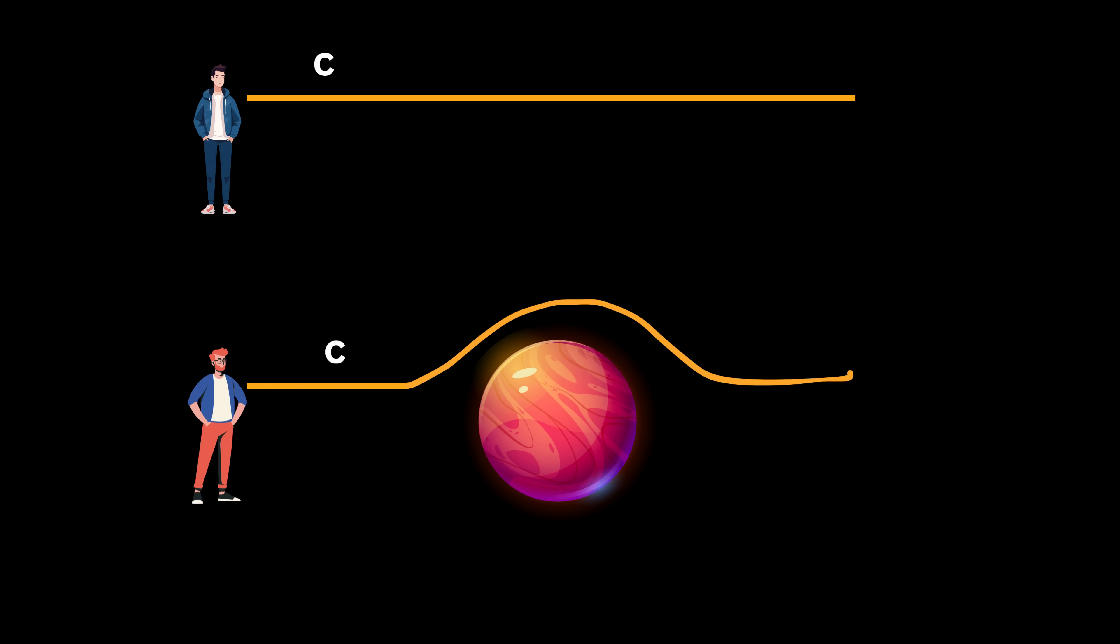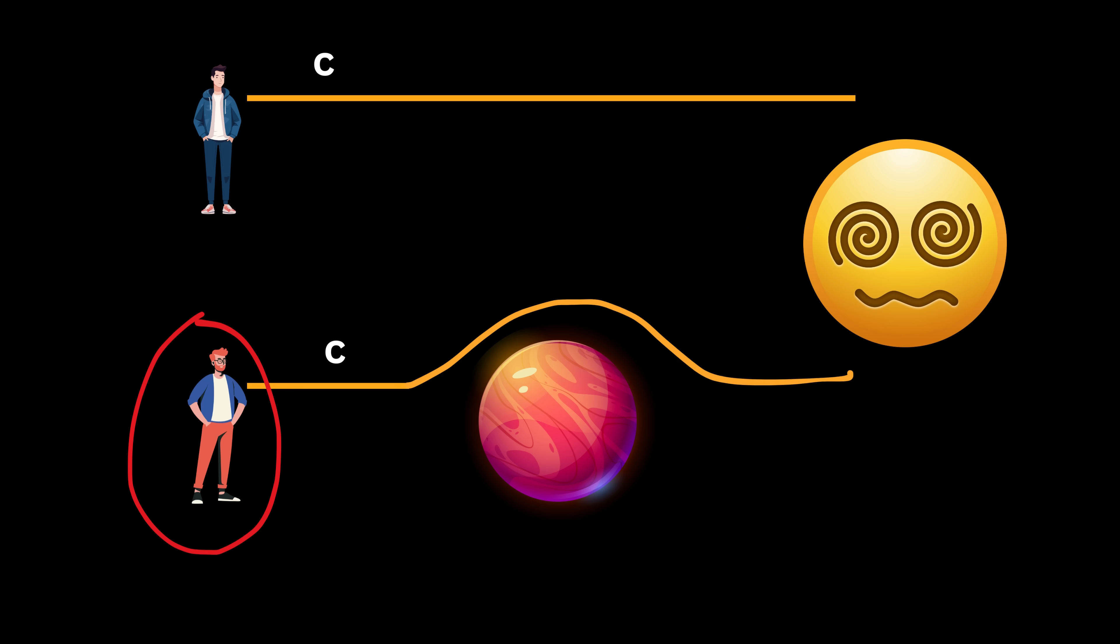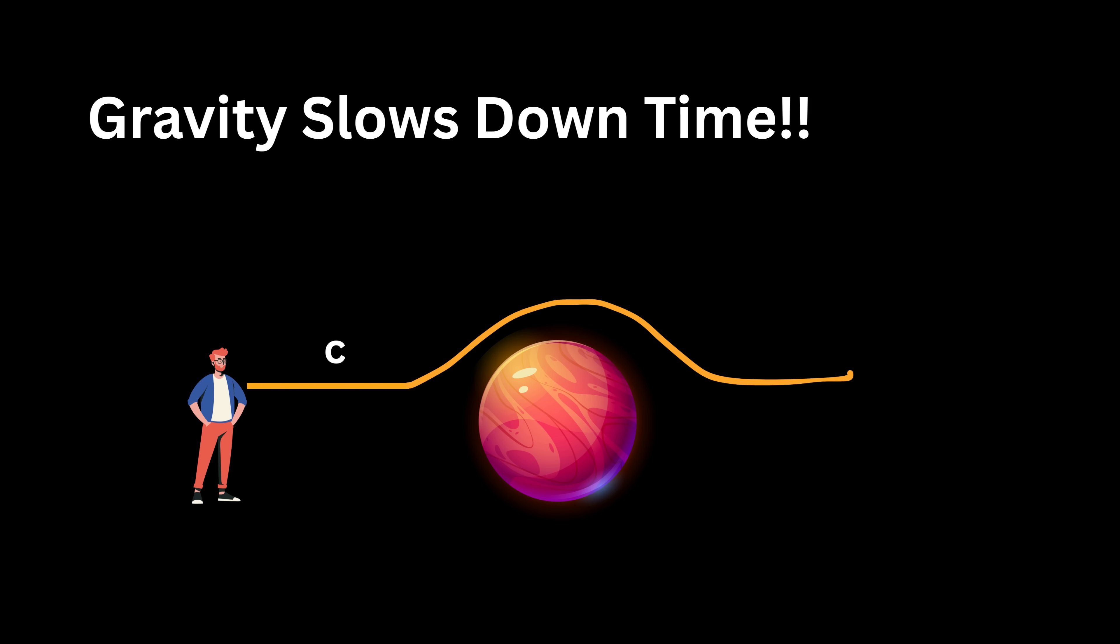This means to balance everything out. Time itself slows down for the person near the planet. That's why gravity slows down time, to keep the speed of light the same for everyone, even in curved space. This effect is called gravitational time dilation.